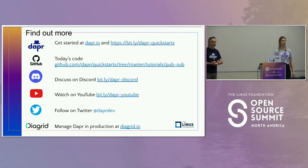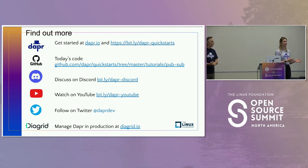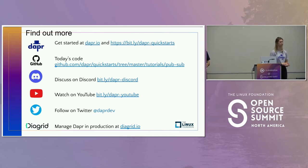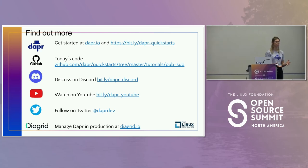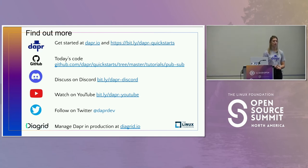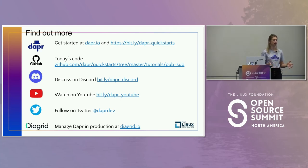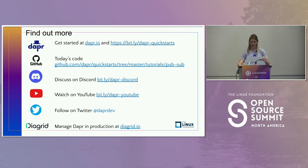We want to be conscientious of the next session, so we'll wrap up now. We're happy to stick around and answer questions. Thank you all so much for coming. Definitely check out the Dapr project — we have a really active Discord channel with over 3,000 members. If you're interested in running Dapr at scale on Kubernetes, definitely reach out to us at Diagrid.